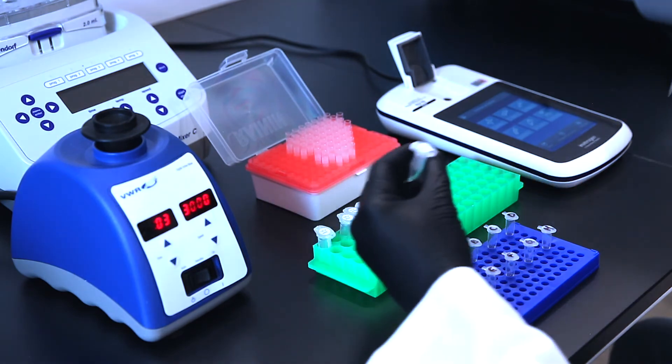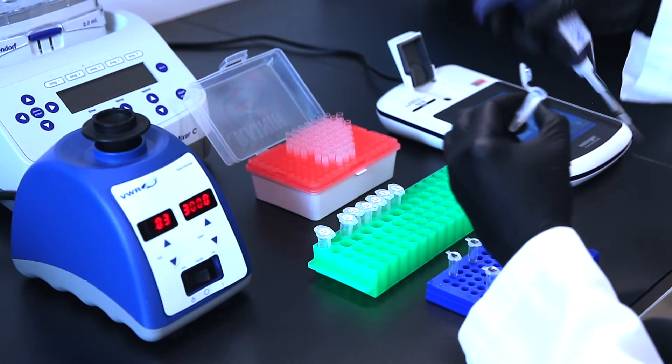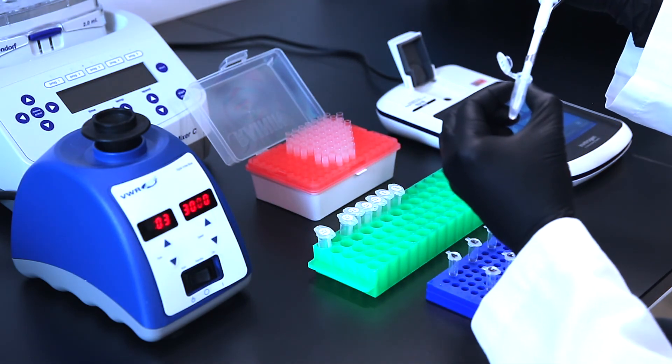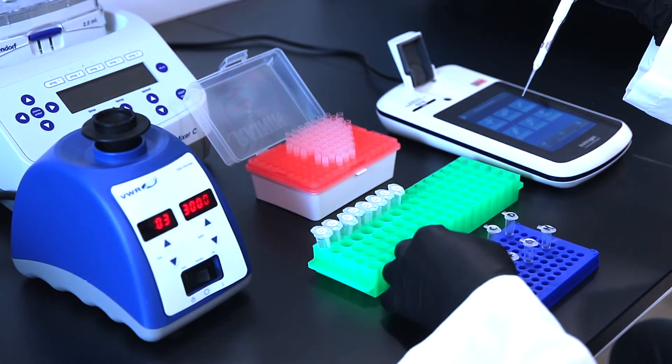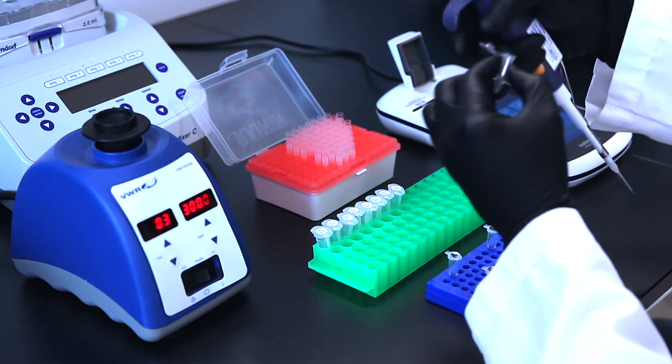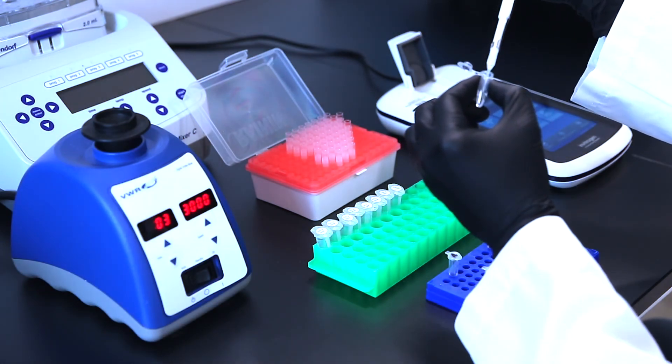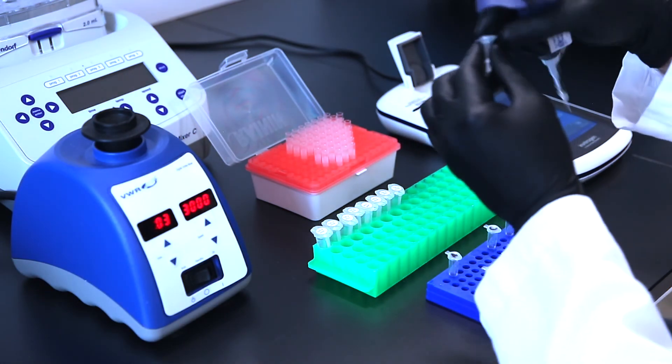To conclude the demonstration, we analyze each sample using a Qubit double-stranded DNA high-sensitivity assay and a calibrated Qubit fluorometer. A 2 microliter aliquot of the purified sample is diluted to a 200 microliter assay volume with the Qubit working solution.